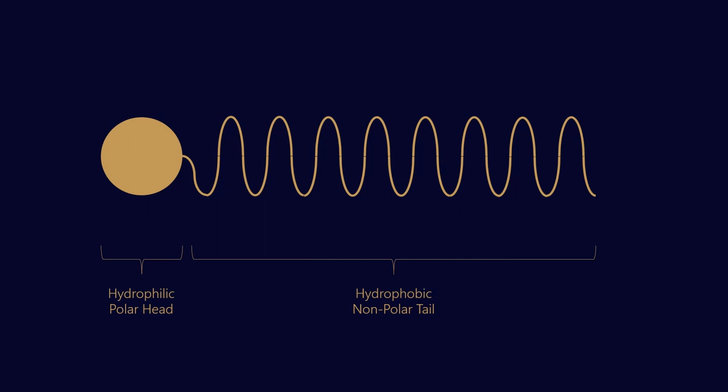Oil is non-polar so this tail will want to bond with the oil whereas the head will want to bond with polar contaminants, polar additives, metal surfaces, things like that.